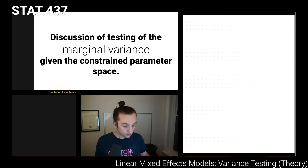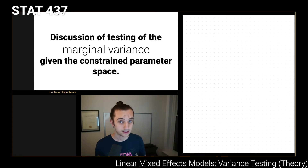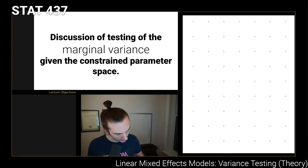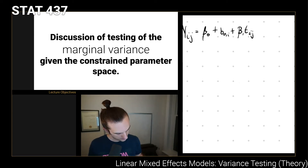The core piece to understand is that if we want to test the marginal variance model or any component of it, we're not going to be able to rely on standard asymptotic theory. To make this concrete, let's say we're working with the random slope-intercept model where the only variate of interest is time. So we have y_ij with an intercept term and a random intercept, a slope term beta_1 * t_ij, a random slope term b_1i * t_ij, and then epsilon.